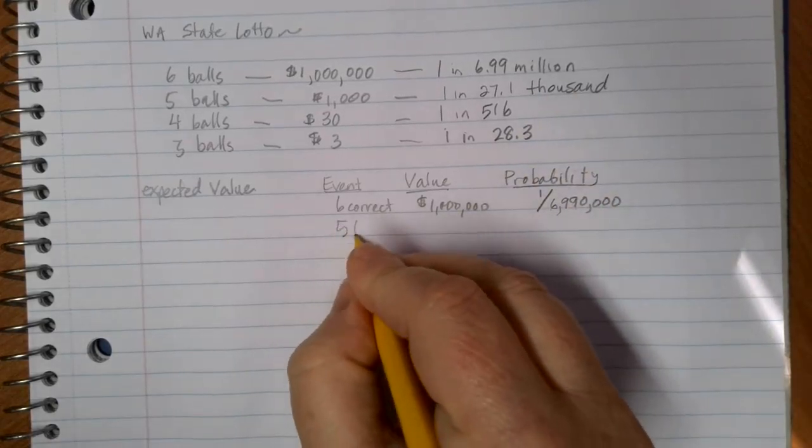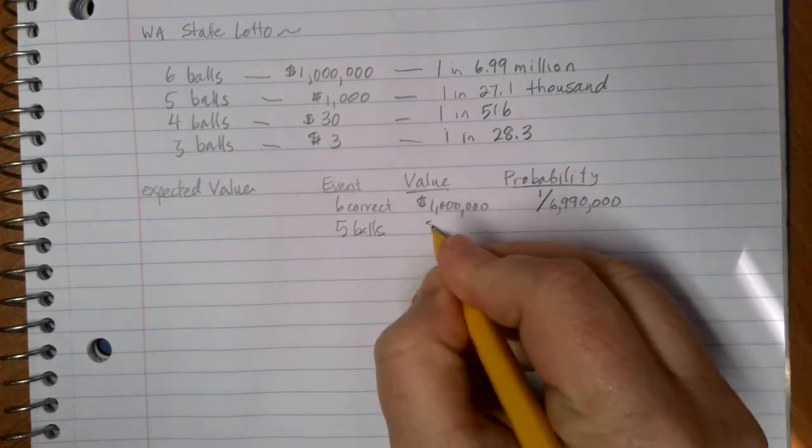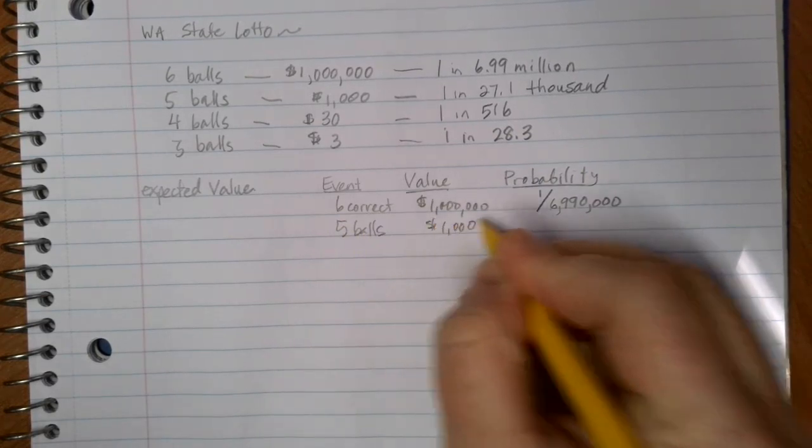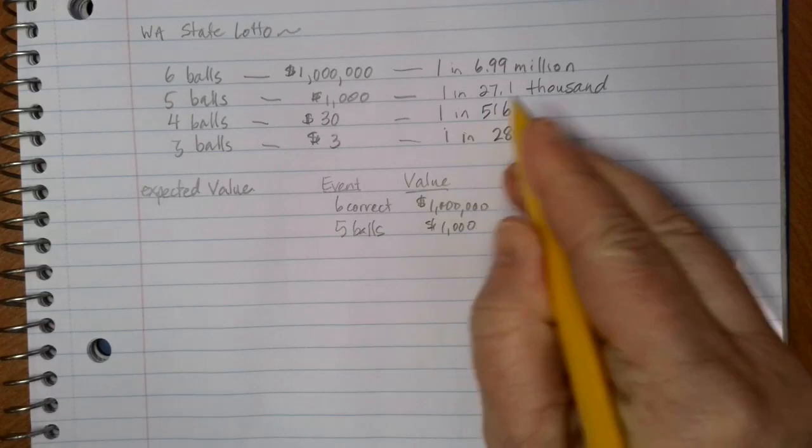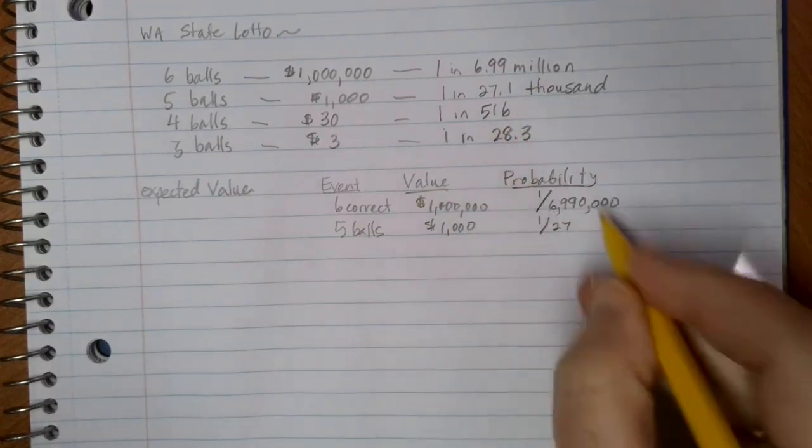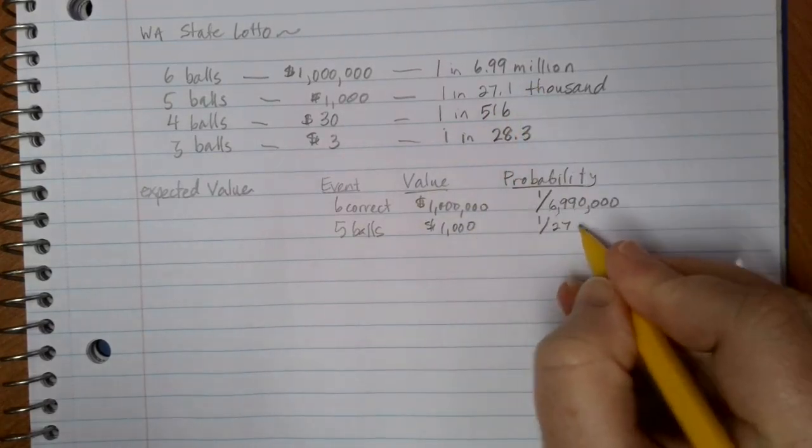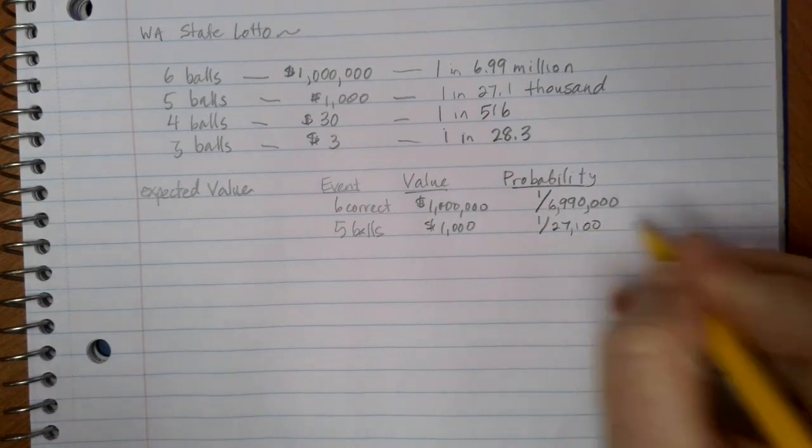If we get five balls correct, the value is just $1,000, but the probability is 1 in 27.1 thousand. So again, make sure you have your zeros correct. This is $27,000, the 0.1 gives us the $27,100.